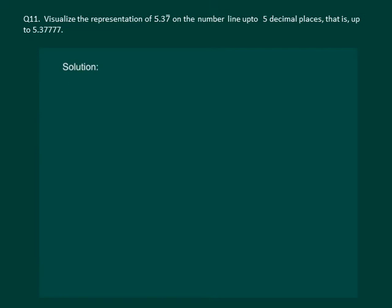Let us read the question. Visualize the representation of 5.37 bar on the number line up to 5 decimal places. That is up to 5.37777.